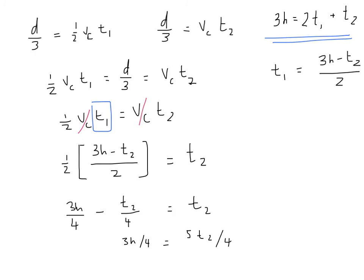And what do we see? We see that this 4 cancels with that 4, which gives us the nice simple equation 3H equals 5T_2, or T_2 equals 3 fifths. That's 0.6 hours.